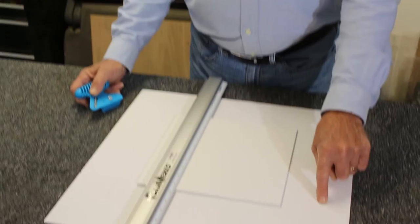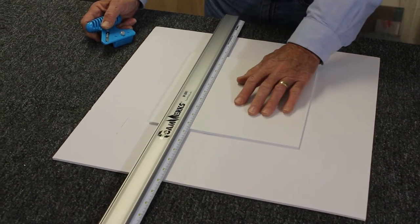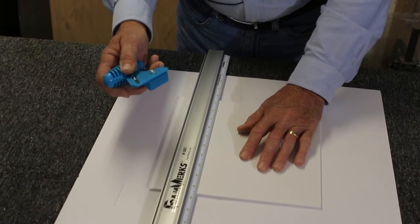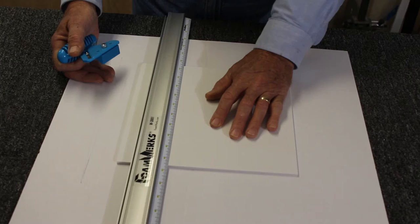When using the straight bevel cutter and some of the other Foamworks tools, always put a piece of foam core under your work. That protects your work, it protects the blade on the Foamworks cutter and it protects the table and everything else. Just make that a habit.